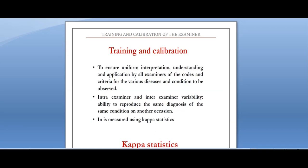Suppose we have two examiners, Mr. A and Mr. B. They are supposed to be well-versed and perfect in understanding the indices so that they can produce accurate results. What if Mr. A and Mr. B have not studied or prepared well with the indices, criteria, and methodology? They would produce wrong and inaccurate results, and the entire research or study would be at a total loss.